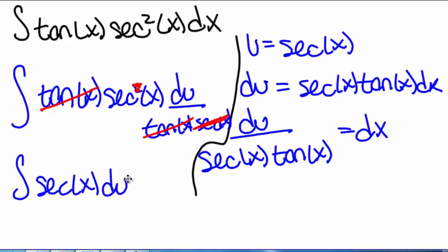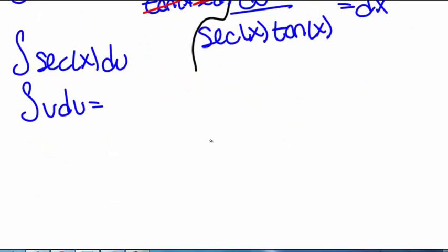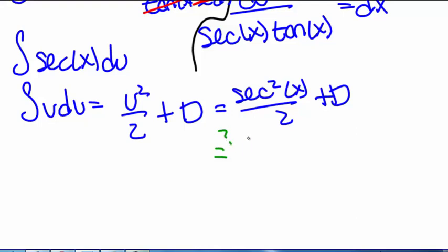Now we're ready to plug in for u. We have the integral of u du. Taking that integral gives u squared divided by 2 plus a constant d. Plugging back in for u, we get secant squared of x divided by 2 plus d. The question is: does this equal tangent squared of x divided by 2 plus c?